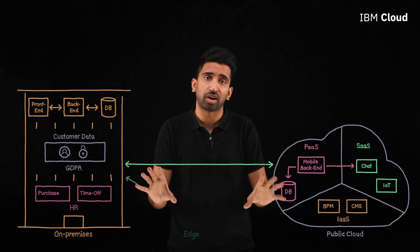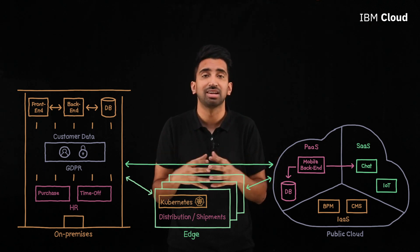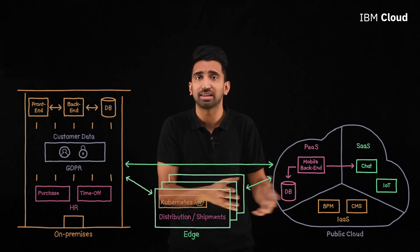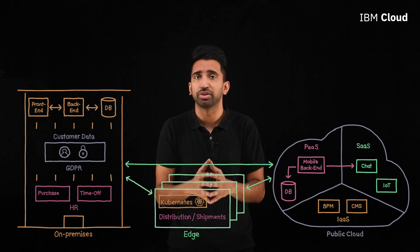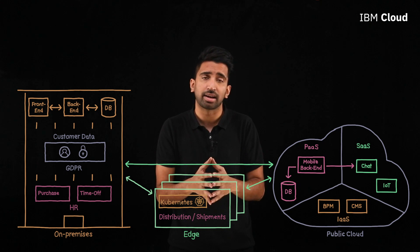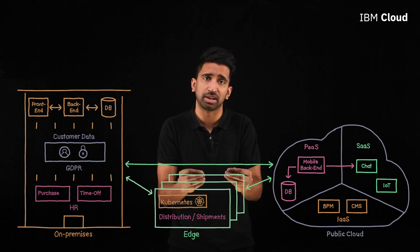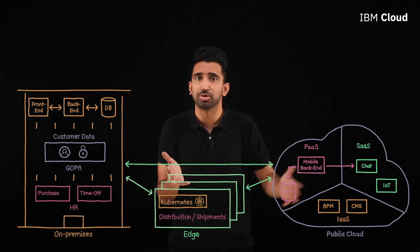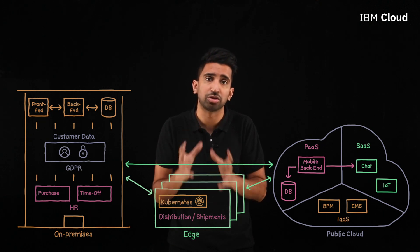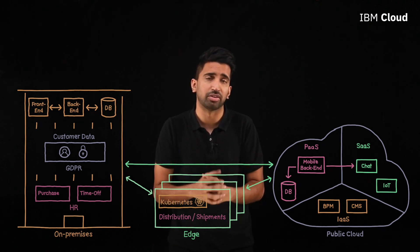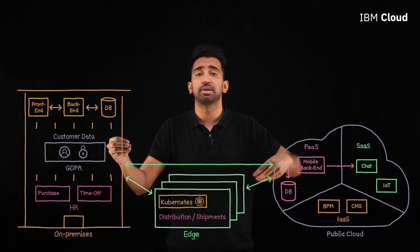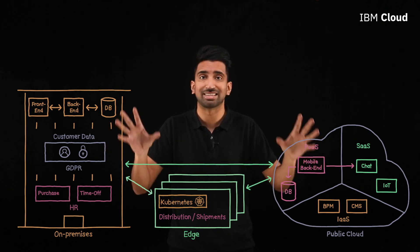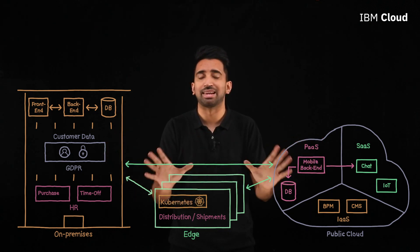Finally, they've also got edge environments — things like distribution centers. They're called edge environments because they're at the edge, where data is being created. These distribution centers enable the company to run workloads right where the data is being created — maybe something like Kubernetes or OpenShift to manage the edge workloads. Those are integrated to their on-premise and cloud environments to share data about shipments, so users are getting the latest information about where that shipment is.